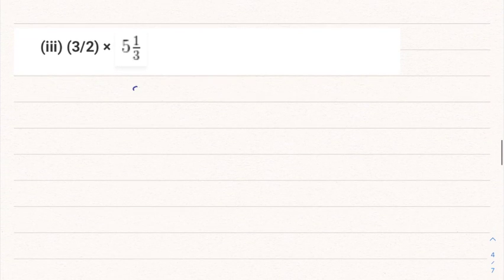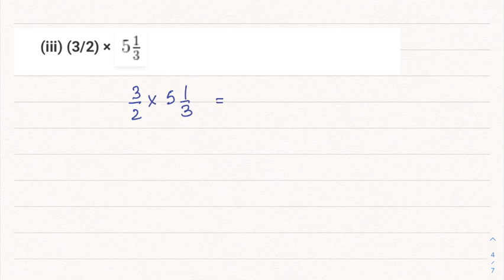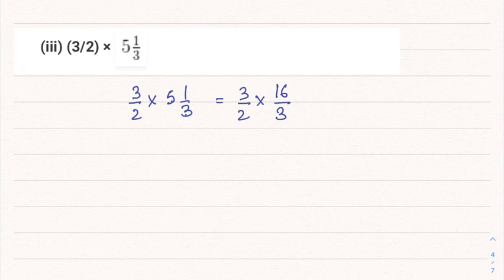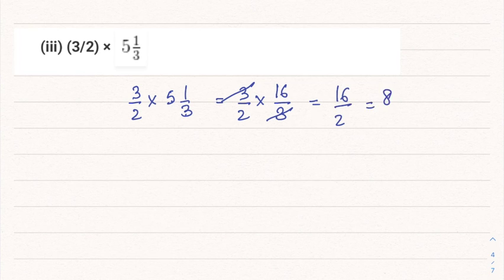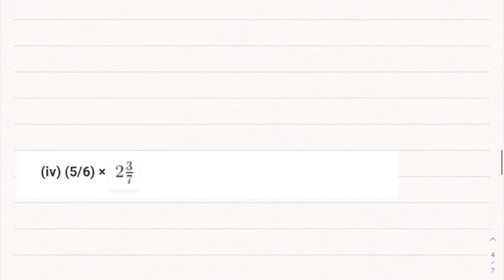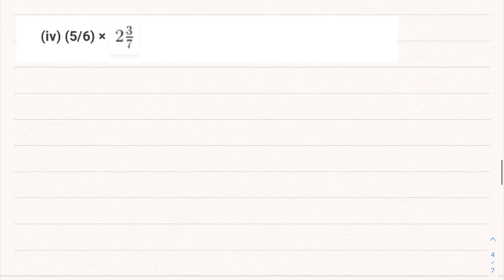Part 3: 3/2 multiplied by 5⅓. Convert 5⅓: 5 into 3 is 15, plus 1 gives 16/3. The 3 in the numerator and denominator cancel, leaving 16/2, which simplifies to 8. So the answer here is 8.